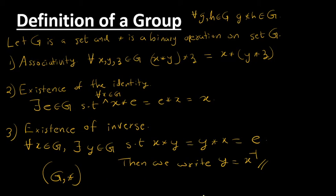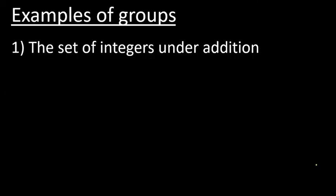I think you have got these three properties clearly. Let's go through some examples — then it's easy to realize what these three properties mean. So the first example is the set of integers under usual addition. We need to find out whether this is a group or not, so let's go through the properties one by one.